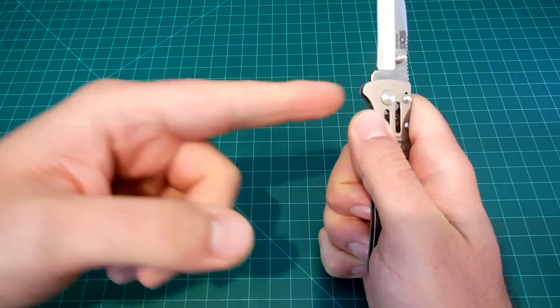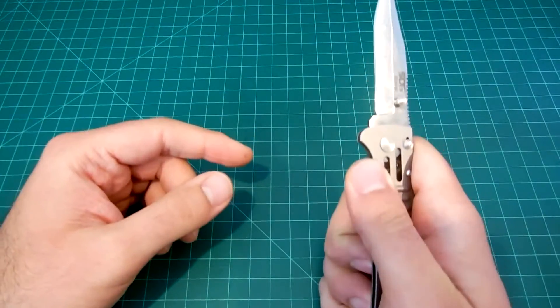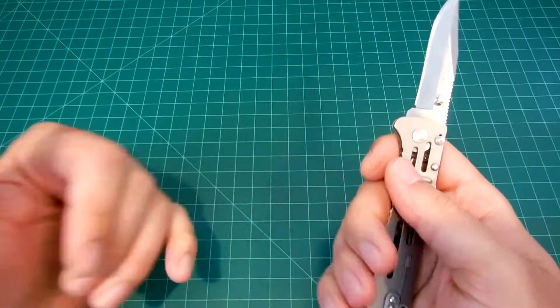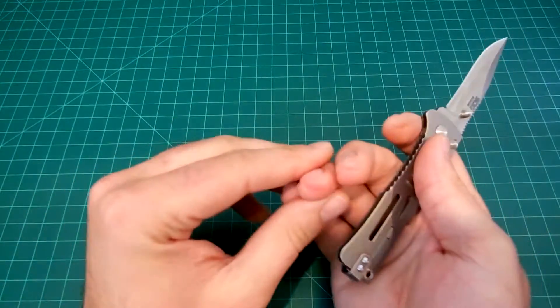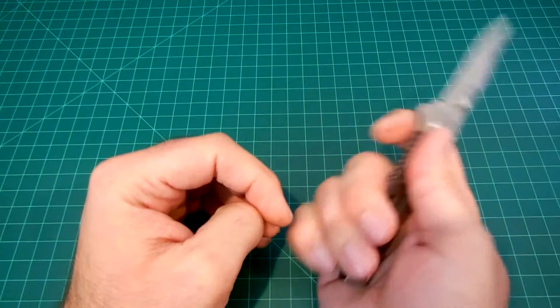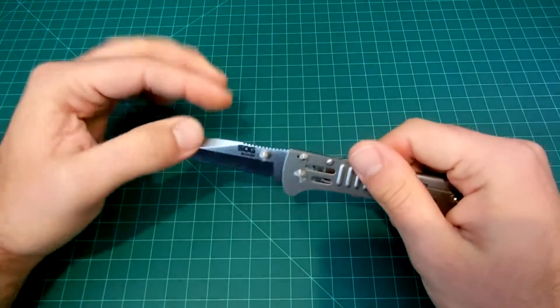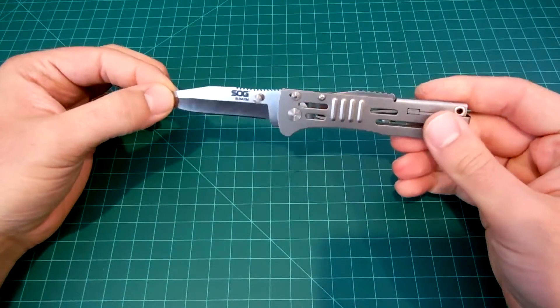While holding this really tight in your palm you flick the thumb stud and it opens up. I found that to be rather successful. The only downside to that is that it gives you blisters on your fingers. With that being said, I'm actually liking this knife.